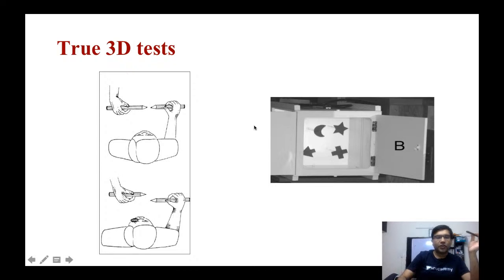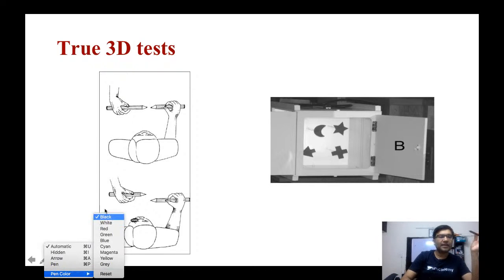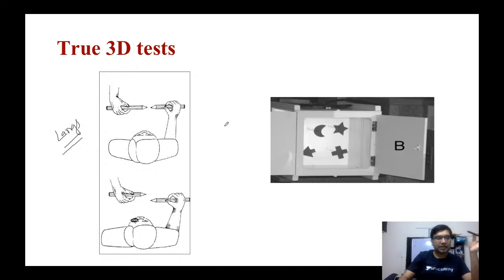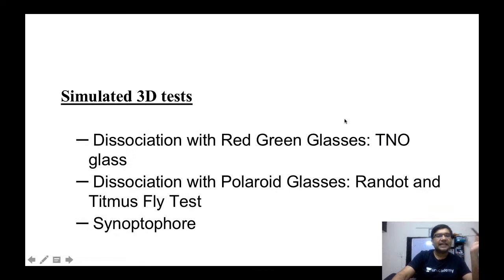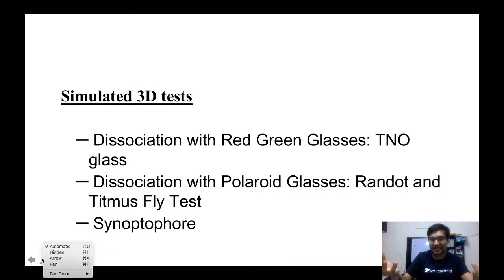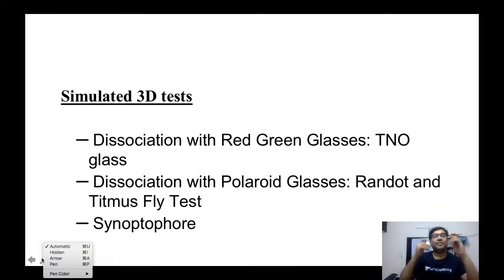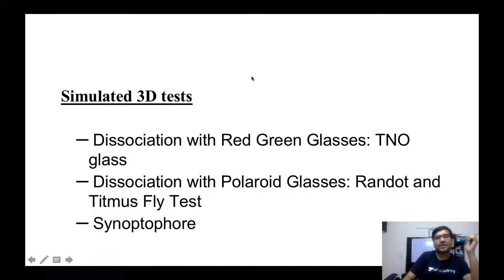This is the Lang's test, and the second is the Frisby-Davis test. In the Frisby-Davis test you can see various shapes — some of them are nearer to you and some are more distant. Then the second category of tests is called simulated tests. With simulated tests, when you see with both eyes you cannot detect the depth, but when you put special glasses in front of you, then you can. The first principle: imagine you have a cage image in one eye and an animal image in the other.